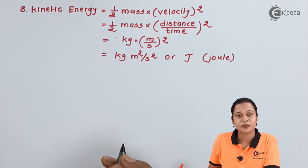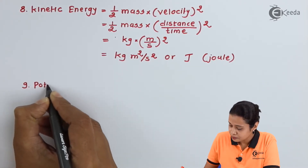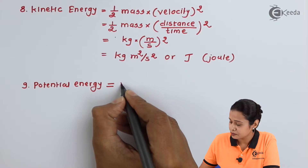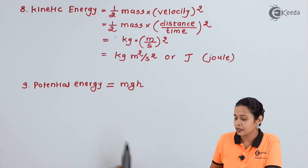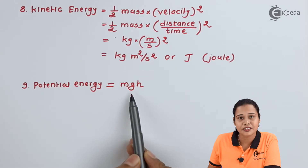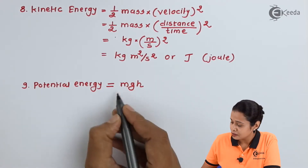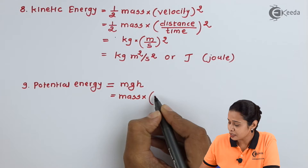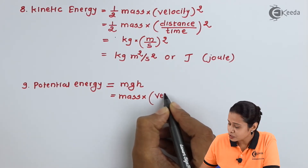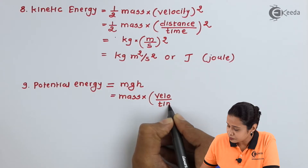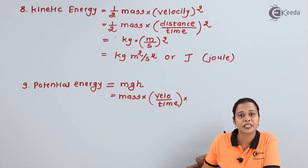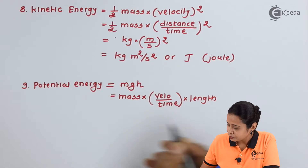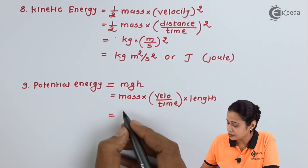The next physical quantity we will take is potential energy. We know potential energy is mgh, where m is mass, g is acceleration due to gravity, and h is height. We write mass into acceleration due to gravity, which is velocity per unit time, into height. Height can be expressed in terms of length.